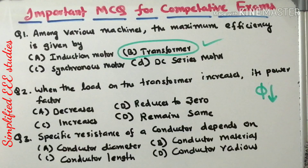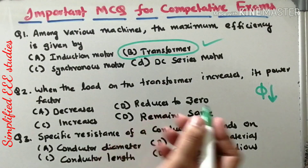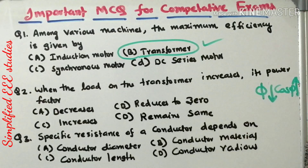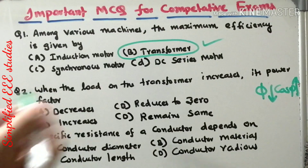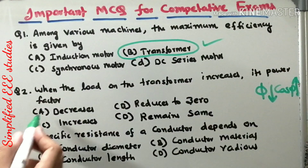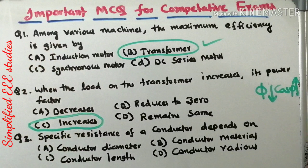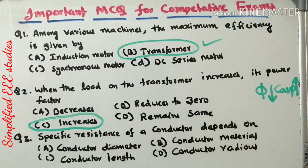Whenever the phase angle difference between voltage and current is reducing, cos phi is getting improved — cos phi is getting increased. Cos phi is nothing but the power factor. Whenever the phase angle difference is reducing, automatically power factor cos phi is getting increased. So the right answer is option C: when the load on the transformer increases, its power factor increases. This is actually one of the repeated questions for SSE examinations.